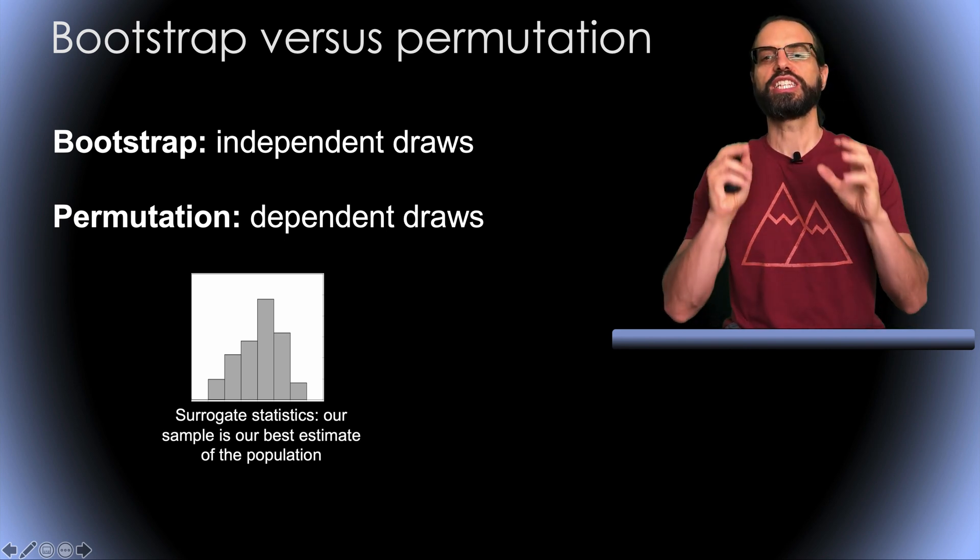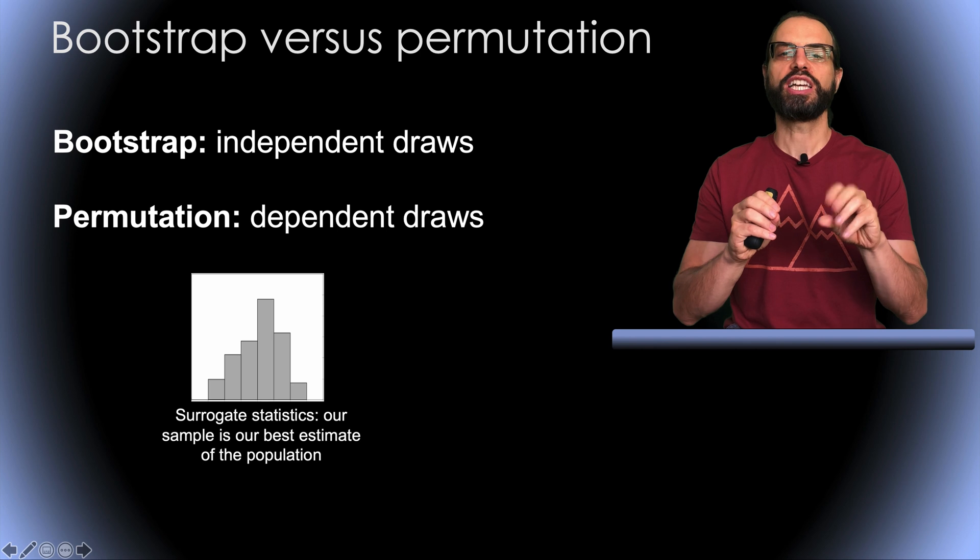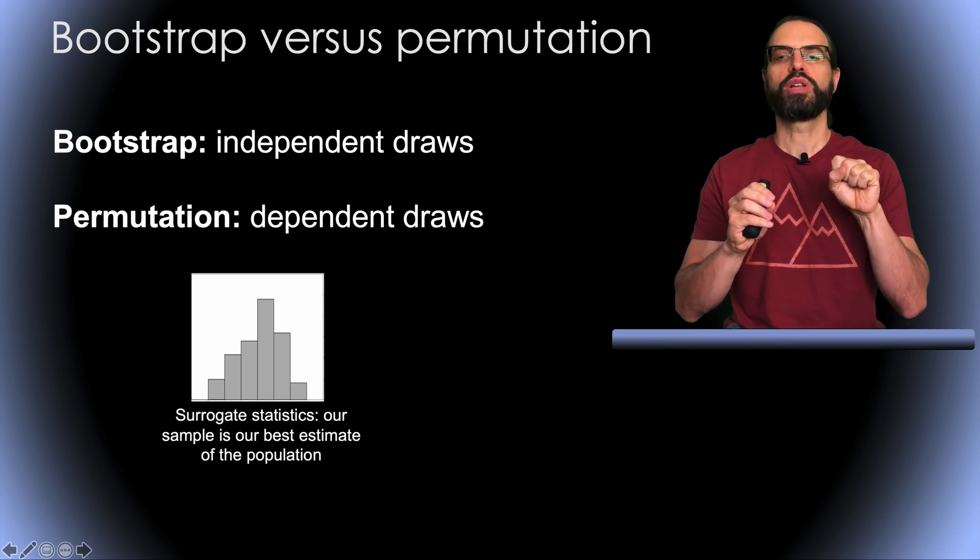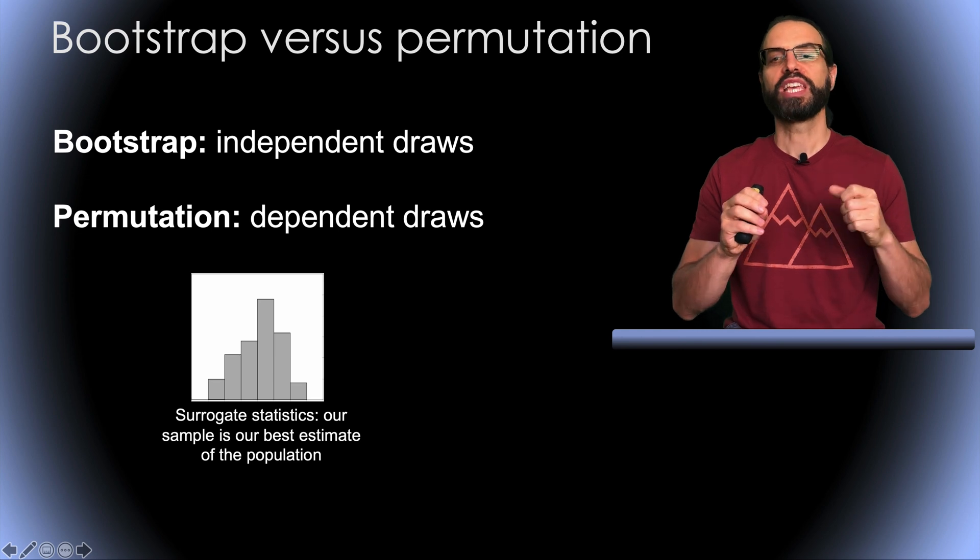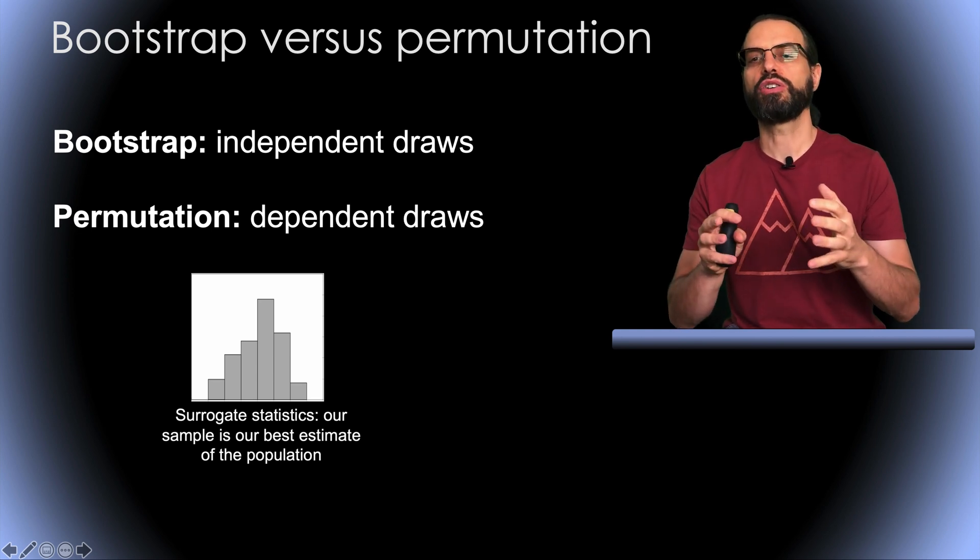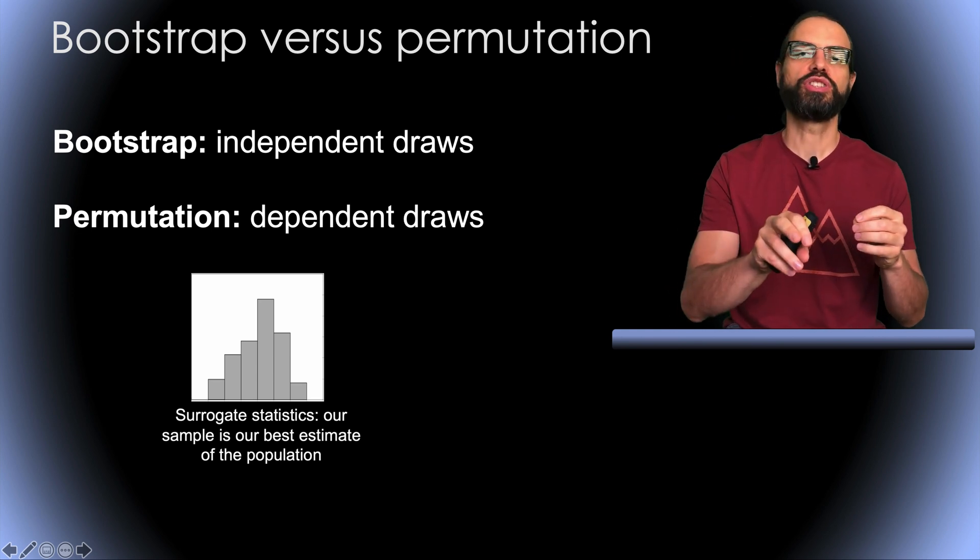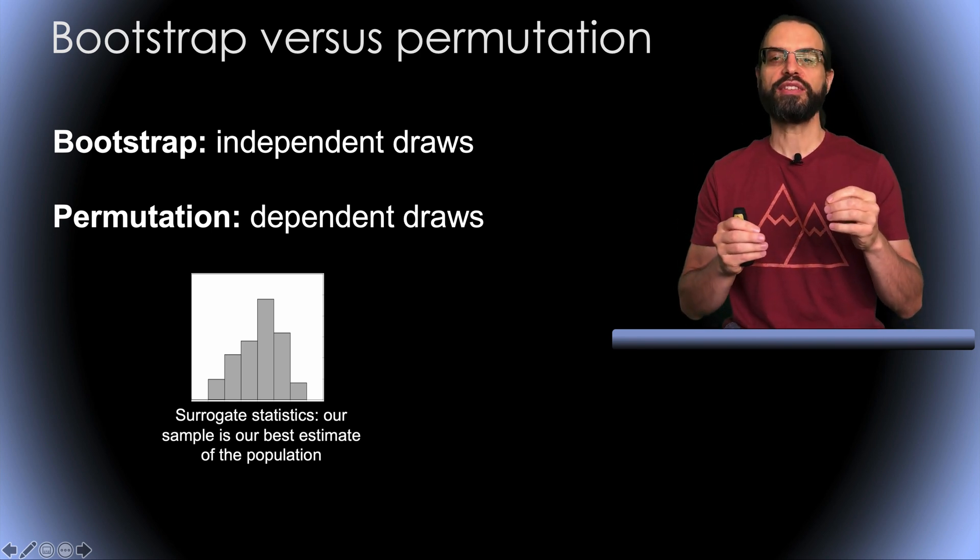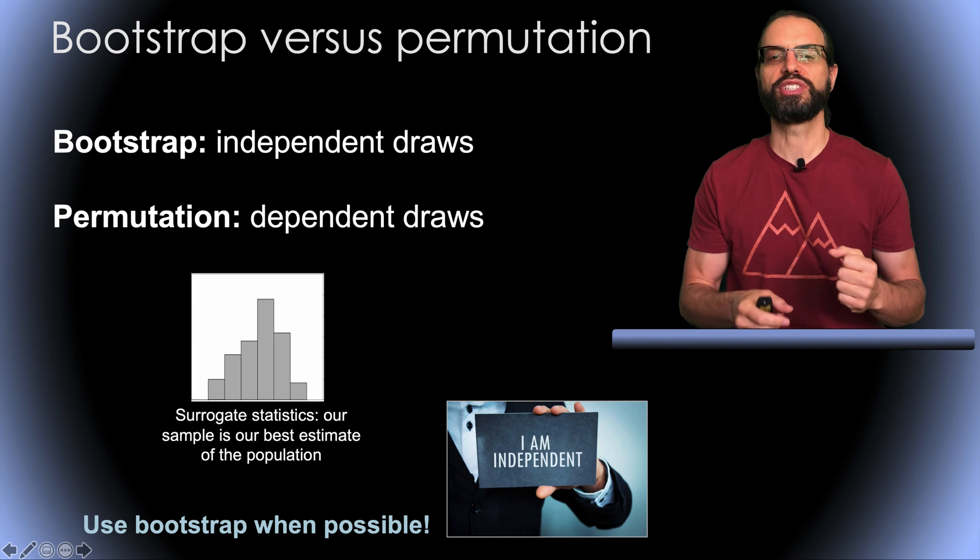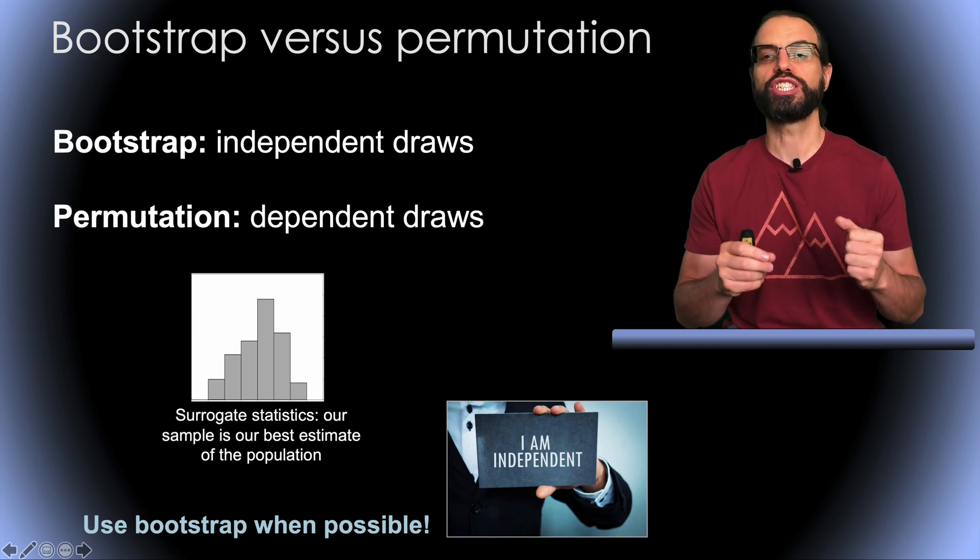This is not the case for permutation where we draw each value only once. So when you're using permutation, each draw depends on the previous ones. Imagine you're drawing subjects from the general population. Picking a subject should not depend on the subject you've picked before.